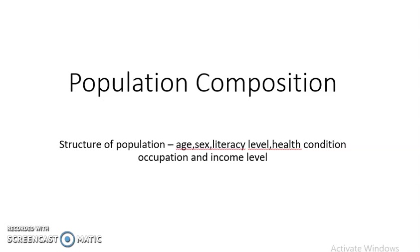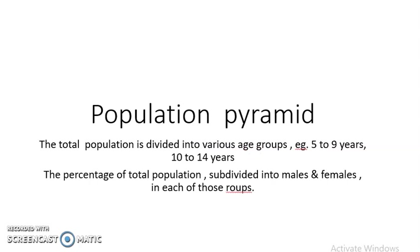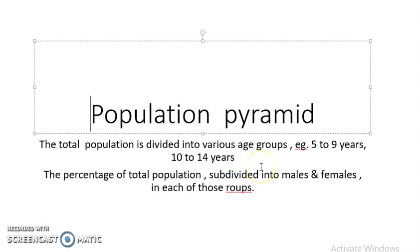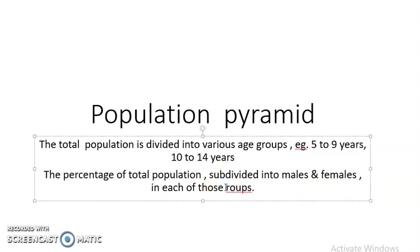Next, let us see the population pyramid. A population pyramid is a particular structure that shows the total population of a country divided into various age groups — for example, 5 to 9 years, 10 to 14 years, and so on. The total population is further subdivided into males and females in each of those age groups. Comparing population pyramids of different countries, we can see they are of different shapes.